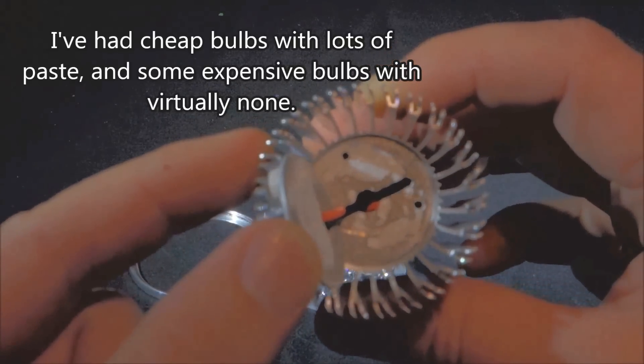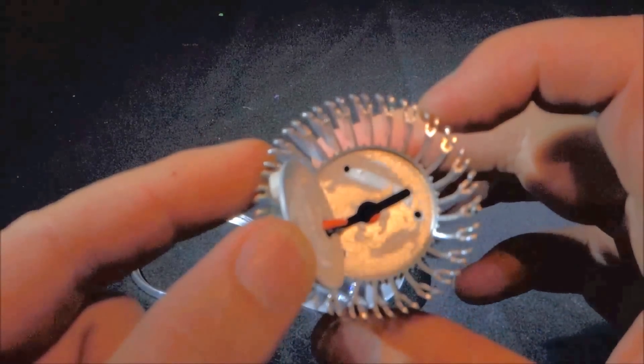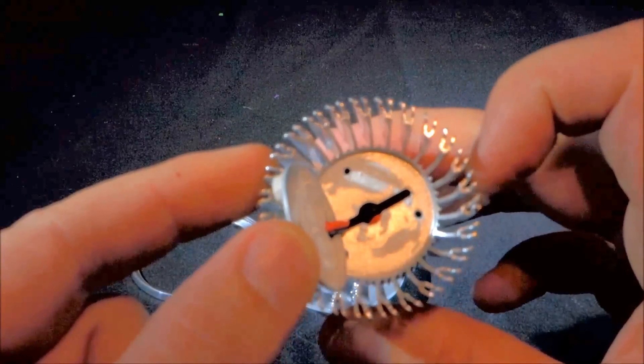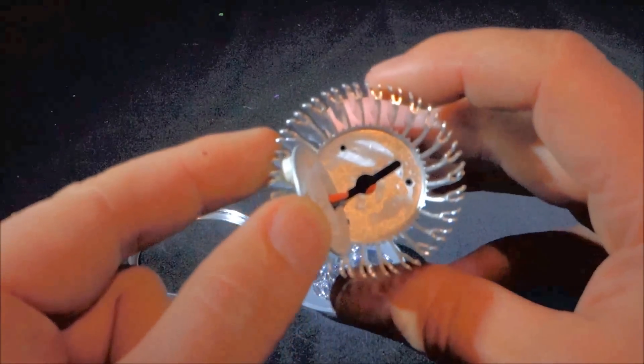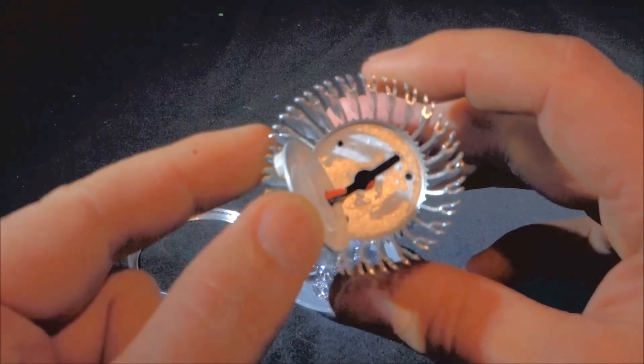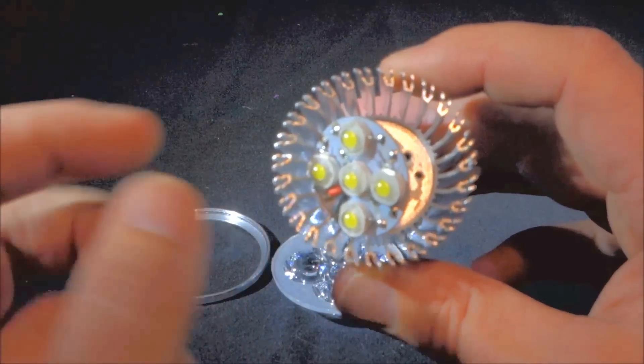So effectively all of these fins that they put around the edge aren't really getting any of that heat in order to dissipate it. And if it can't do that, these bulbs get very hot and they blow.